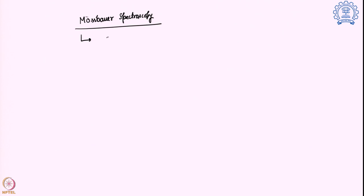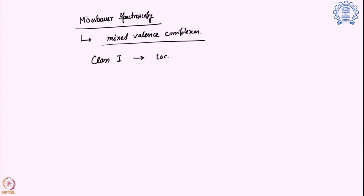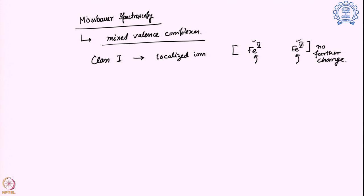Our goal is to use Mössbauer spectroscopy to look into mixed valence complexes. When we talk about mixed valence complexes, they come in three different classes. Class 1 involves localized ions — for example, iron 2+ and iron 3+ remain on their original positions and no further change is observed. So there are two different charges but they are not mixing at all.